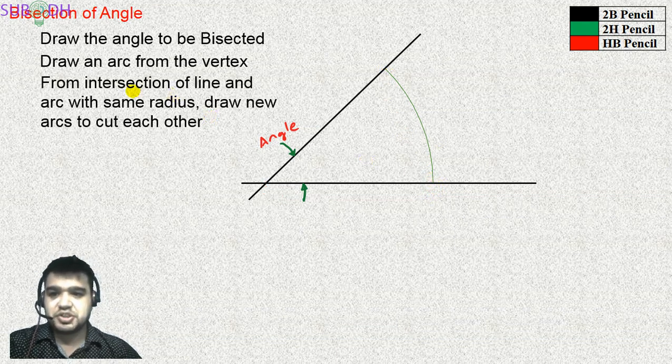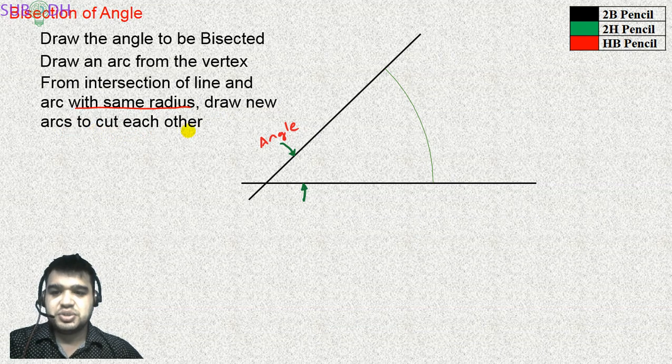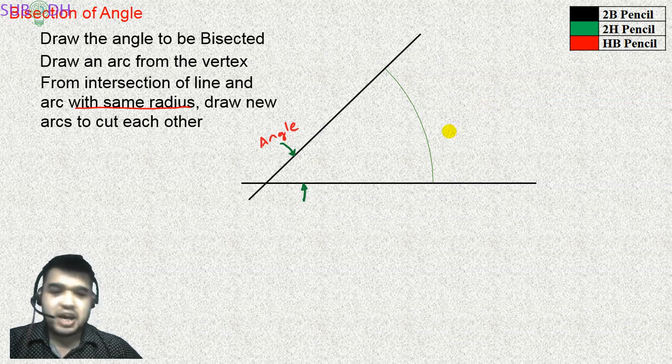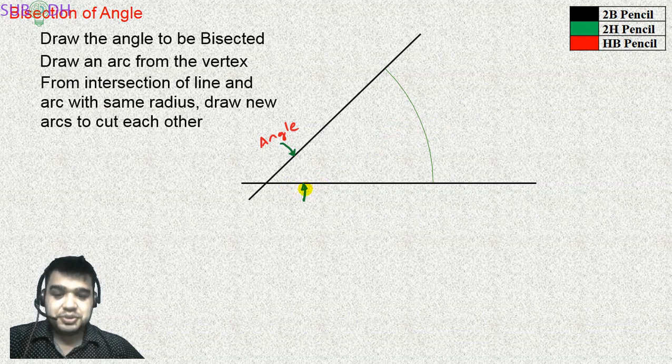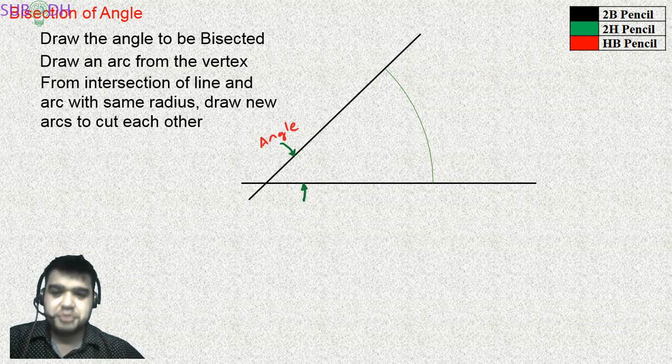Once again, from the intersection of the line and arc with the same radius - this is important - draw a new arc to cut each other. This will be more than half. Change the arc position. More than half of the distance between intersection points. This radius will continue from the same position.